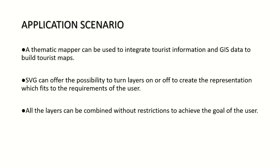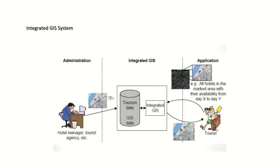In the application scenario, a thematic mapper can be used to integrate tourist information and GIS data to build tourist maps. SVG can offer the possibility to turn layers on or off to create a representation that fits user requirements. All layers can be combined without restriction to achieve the user's goal.